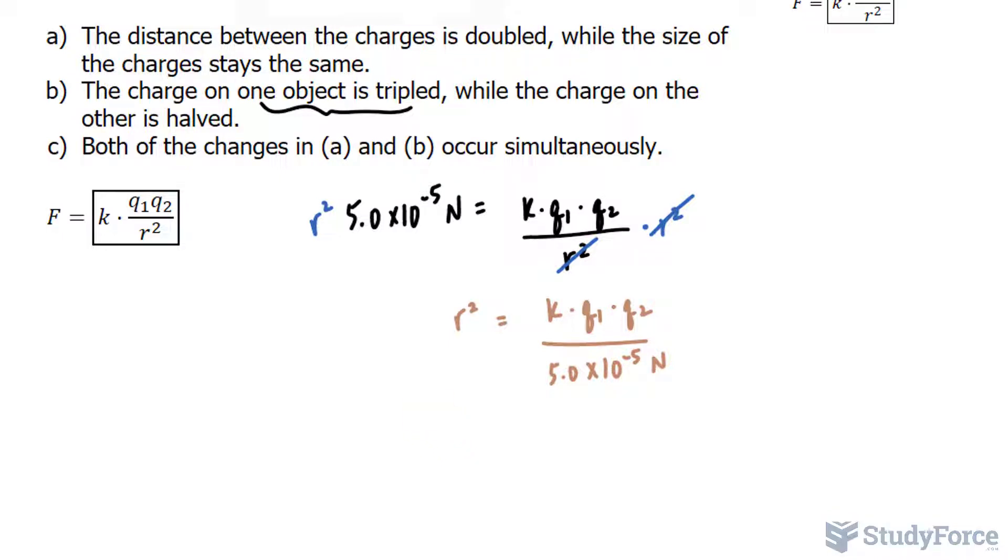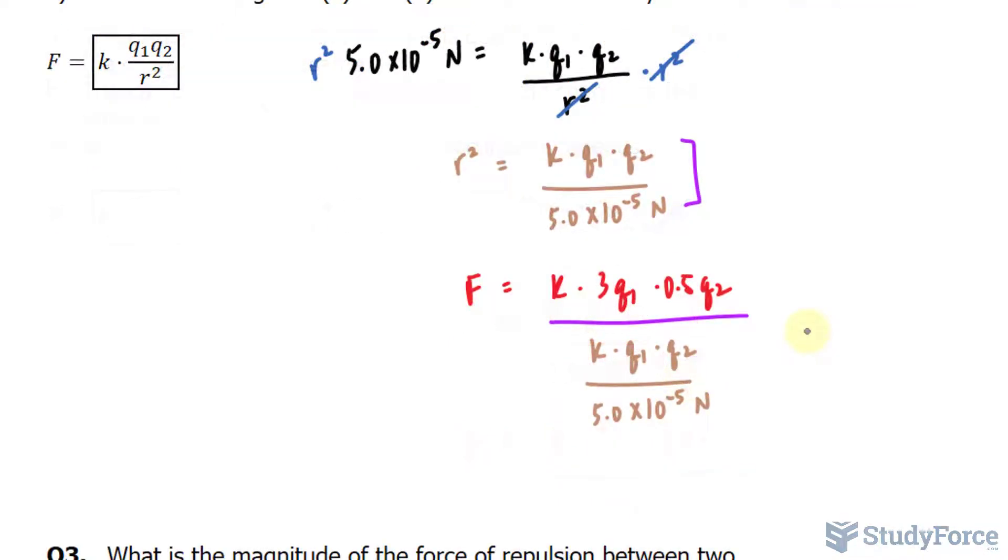So I have the force is equal to k, which remains the way it is. And in place of q sub 1, I'll write down 3 q sub 1. And in place of q sub 2, I'll write down 0.5 q sub 2. And now, in place of the r to the power of 2, which should go underneath here, I will replace that with this expression. Notice that I've replaced r to the power of 2, which should be underneath here, with that expression.